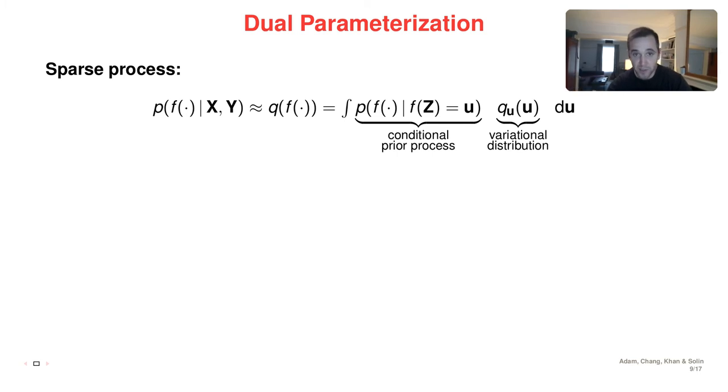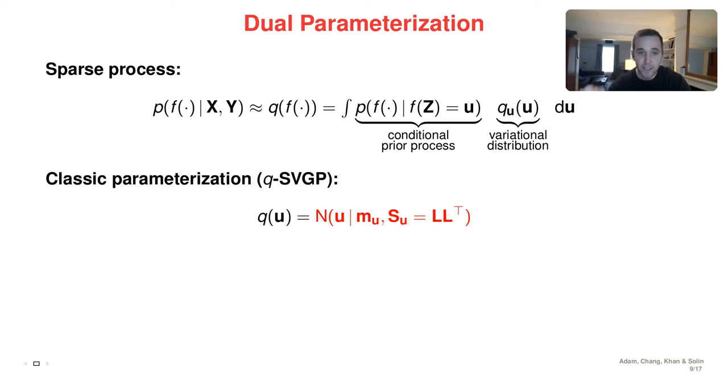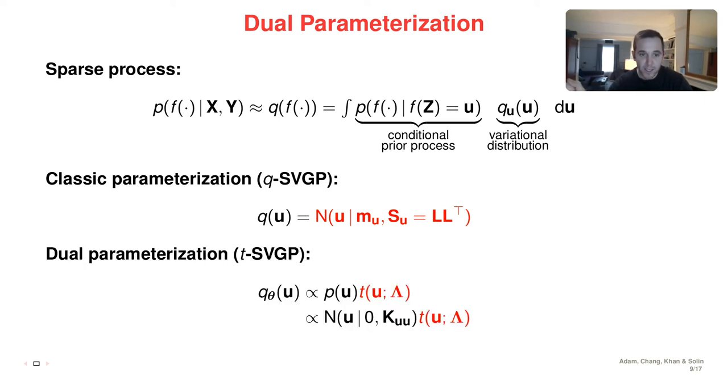So now I'm going to introduce which parameterization we choose. As a reminder, this is the posterior process for a sparse Gaussian process. And it contains this distribution Q over the inducing variable. And in the classic parameterization, the QSVGP to which we compare, this is directly parameterized by its moments, so the mean and the covariance or Cholesky factor of the covariance.